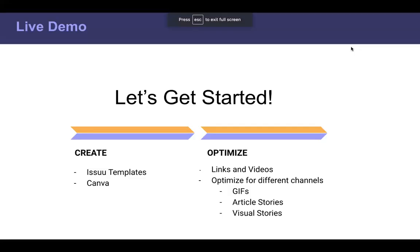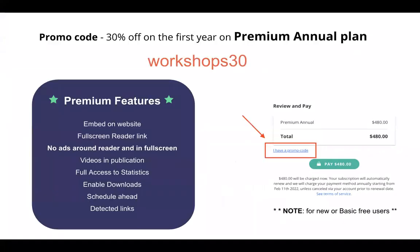To summarize what we covered today: how to create your PDFs using Issuu templates and Canva, how to optimize your content by adding links and videos, and how to optimize for different channels using GIFs, article stories, and visual stories. I mentioned the offer for academy attendees: 30% off your first year on premium. Premium features include embedding on website, full-screen reader, no ads, videos playing directly on the page, full access to statistics, enabling downloading for readers, scheduling publications, and auto-detected links.